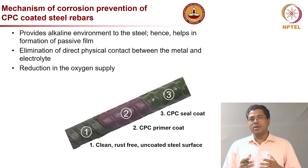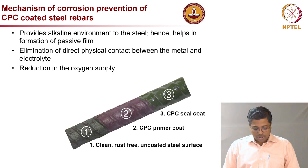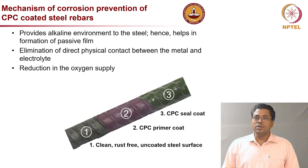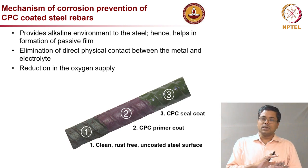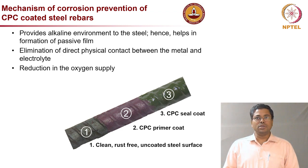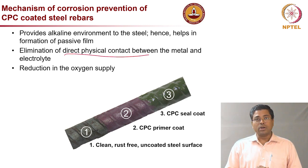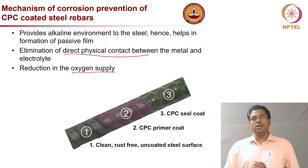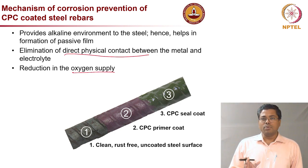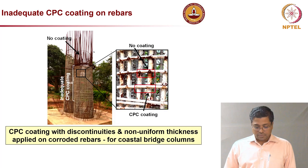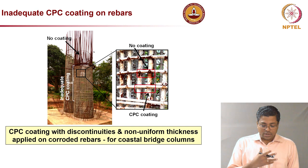The protection mechanism of CPC coated rebar: this type of coating provides an alkaline environment to the steel because of the cement in the coating, which helps in forming a good passive film. This is unlike the fusion bonded epoxy coated rebar, which just acts as a physical barrier with no alkalinity at the steel surface. In CPC coated rebars, physical barrier plus alkaline environment helps in corrosion protection, and it also eliminates direct physical contact between the steel and concrete, reducing oxygen supply.